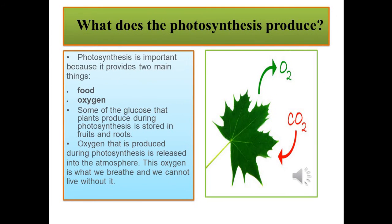What does photosynthesis produce? Photosynthesis is important because it provides two main things: food and oxygen. Some of the glucose that plants produce during photosynthesis is stored in fruits and roots. Oxygen that is produced during photosynthesis is released into the atmosphere — this is what we breathe and we cannot live without it.